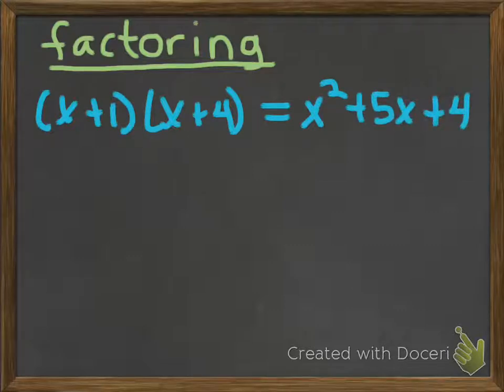So what we are doing now is factoring, which is just going the other way around. You're given x squared plus 5x plus 4, and you're trying to write it as the product of two binomials. So that's what we're doing.